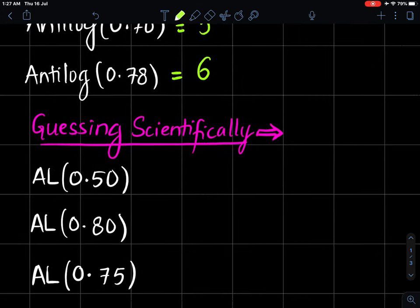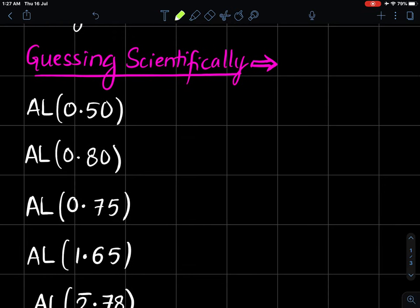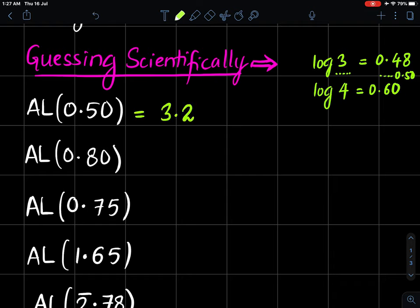Now you can guess scientifically, whose log is 0.50? We know log of 4 is 0.60 and log of 3 is 0.48. You are looking at 0.50, so can I say slightly above 3? The answer should be 3.2. And whatever is this is 10's power—10's power is 0, so answer is 3.2 only.